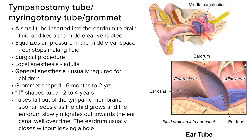Insertion of the tubes is a surgical procedure under local or general anesthesia. Local can be used for adults, but general is usually always required for children since it is necessary to be very still during the procedure. The tube is either shaped like a grommet, which generally remains in the eardrum for eight months to two years, or a T-shaped tube can stay in place for two to four years. Ear tubes fall out of the tympanic membrane spontaneously as the child grows, and the eardrum usually closes without leaving a hole.